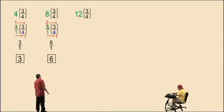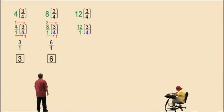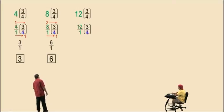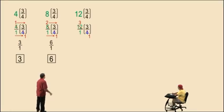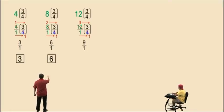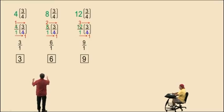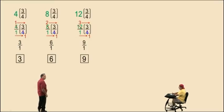Let's do another one: twelve times three-fourths. Let's write the twelve as twelve over one and cancel. They both have a common factor of four, so the twelve becomes a three and the four becomes a one. When you multiply straight across the top and straight across the bottom, you end up with nine over one. Notice all your denominators are one, and the result for this one is nine. In each of these problems, notice those denominators divided evenly into those whole numbers — and when you see that, that's where you can kung fu.